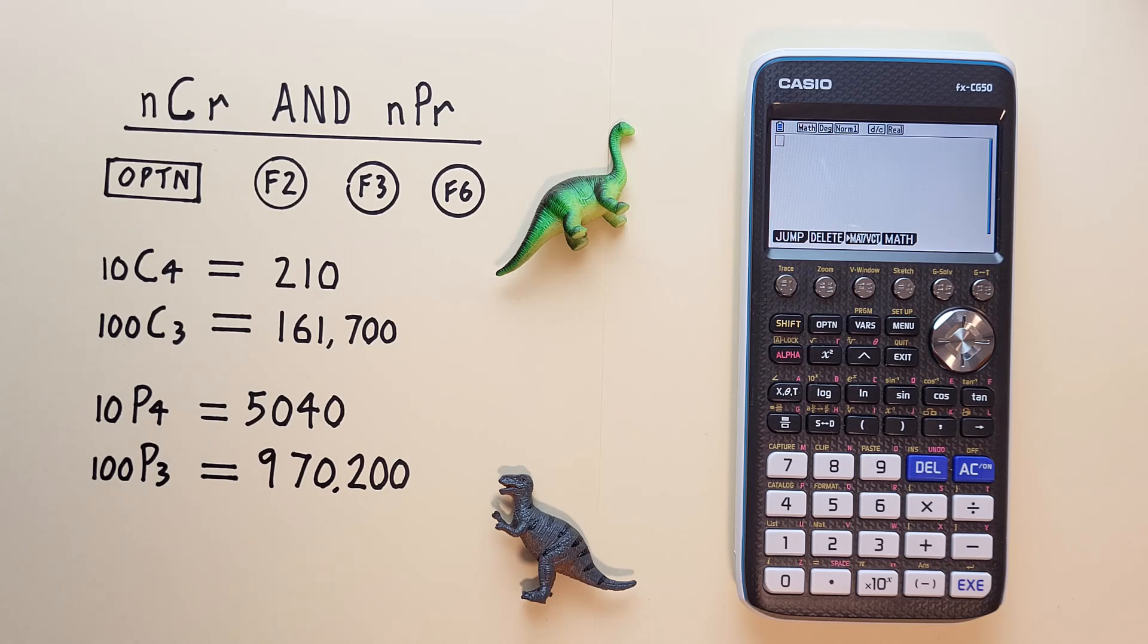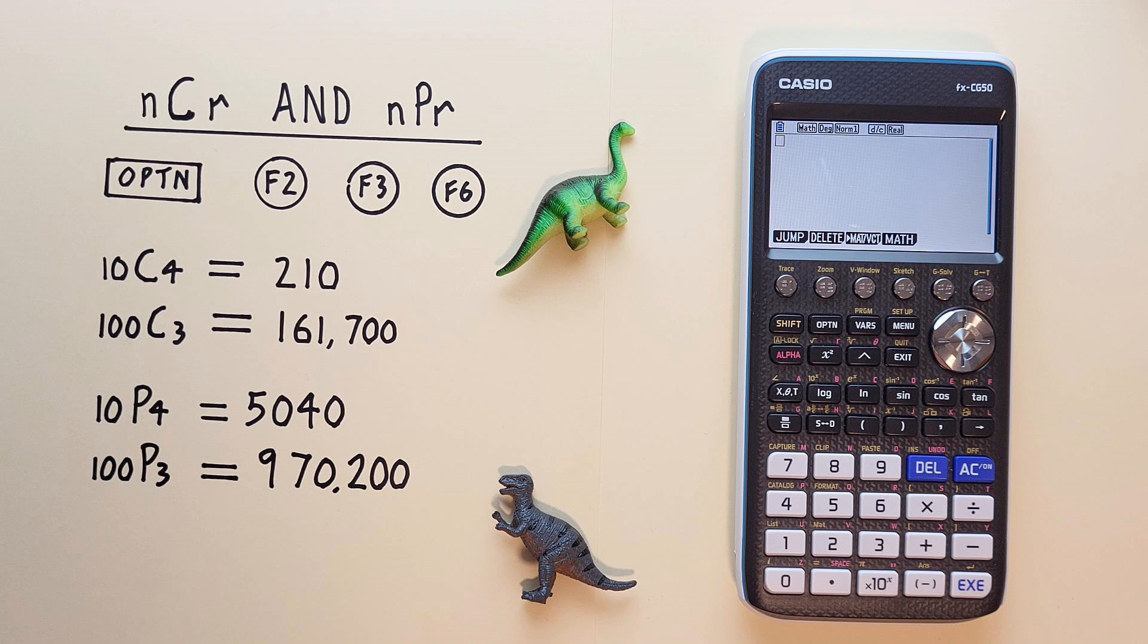Hello and welcome to HD Calcs. I'm Rick, and in this video we're going to have a look at how we can find combinations and permutations on the Casio FX-CG50 graphing calculator. If you don't have one of these calculators but would like one, check the link in the description below.